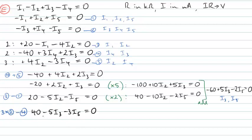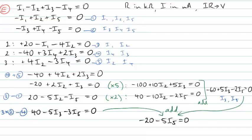Taking those two equations containing only I3 and I5, I simply add them — the I3 terms cancel — and I'm left with a relationship that I can rearrange to find I5 = −4. Remember that currents were calculated in milliamps, so I5 = −4 mA.